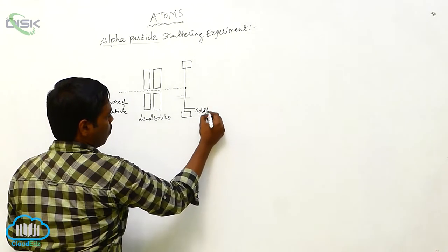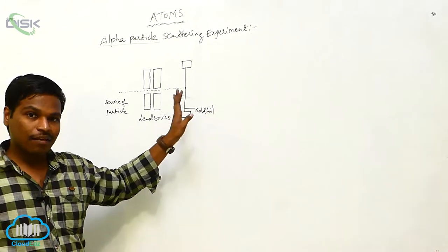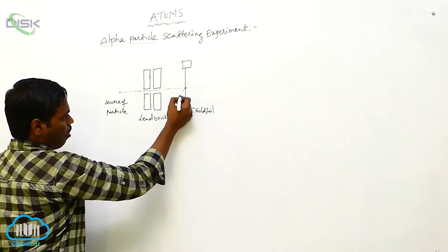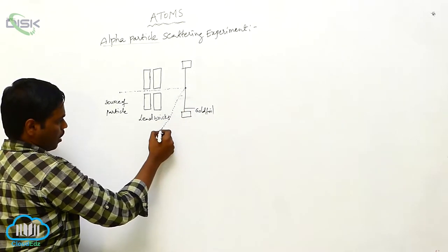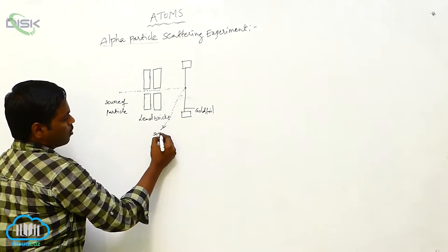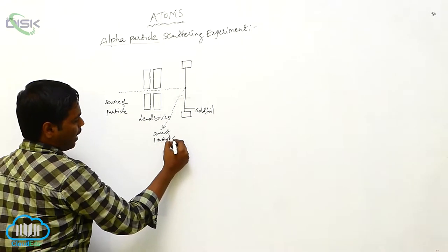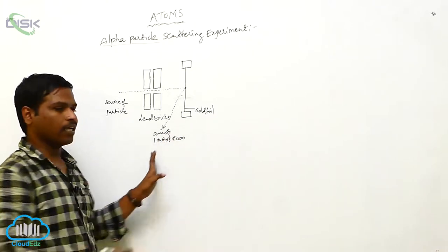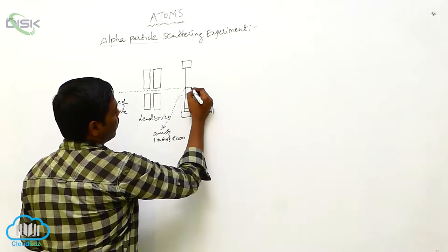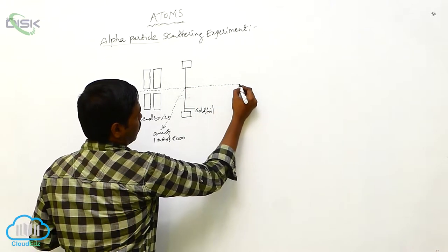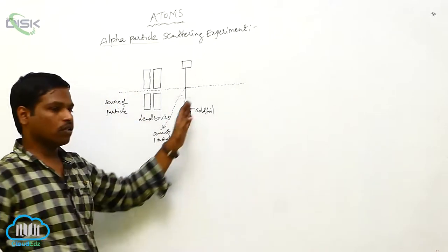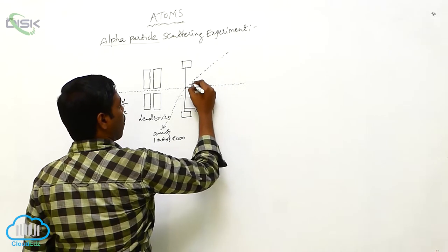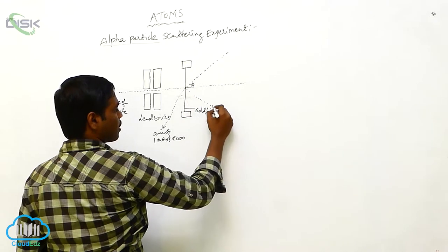This is the gold foil, and when the alpha particles are incident on this gold foil, some of the alpha particles are scattering above 90 degrees angle — only 1 out of 8000 particles comes back. Some of the alpha particles are passing through this gold foil and some are scattering with an angle theta.